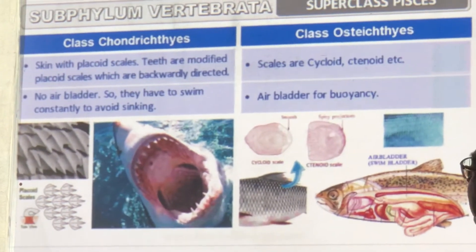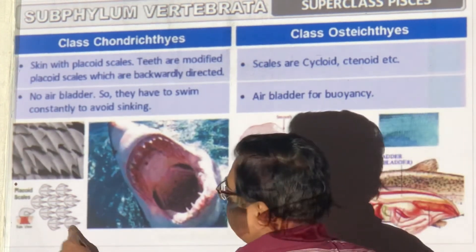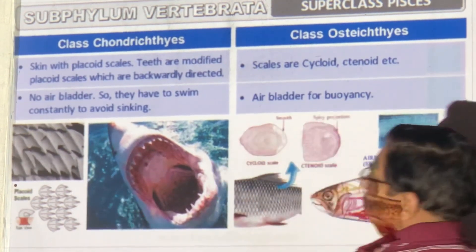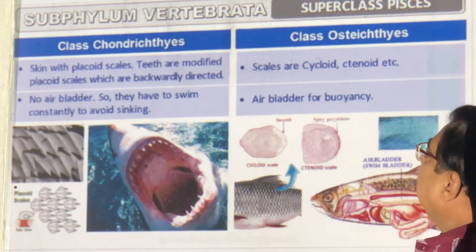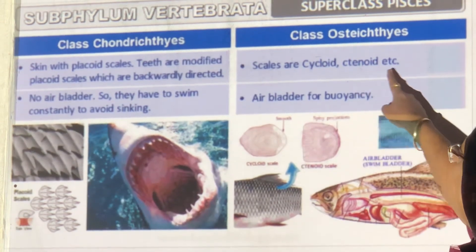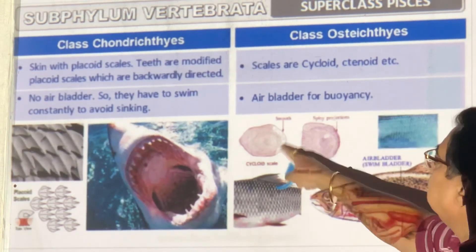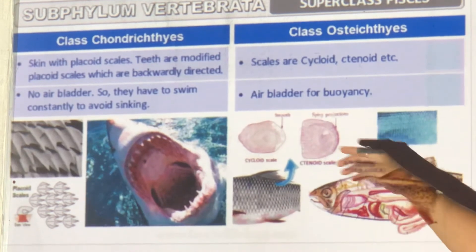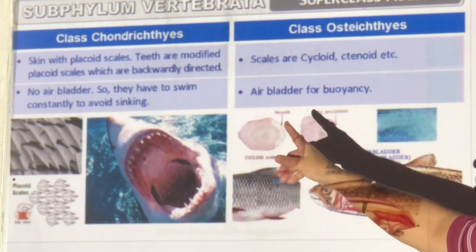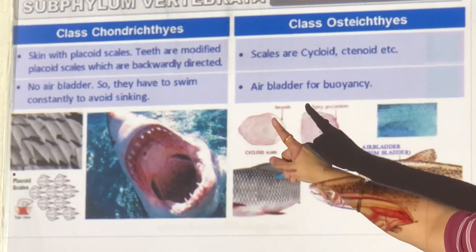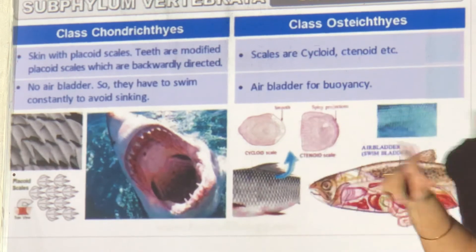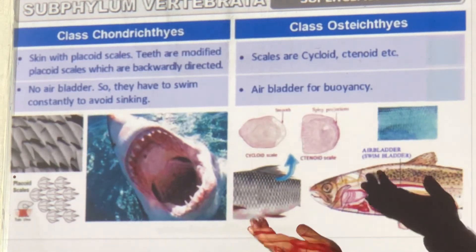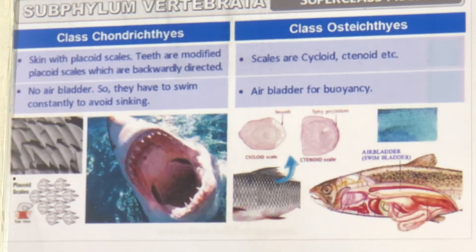Chondrichthyes have placoid scales that are stuck in like needles or thumbtacks. Osteichthyes have cycloid or ctenoid scales. Chondrichthyes have no air bladder, so the shark must keep swimming constantly and cannot rest. Osteichthyes have an air bladder, which allows them to stop swimming and stay buoyant.